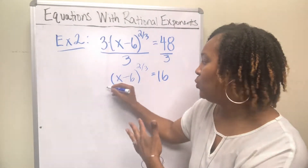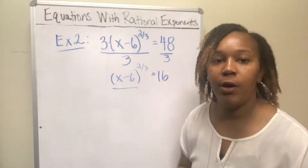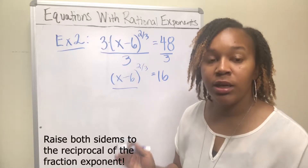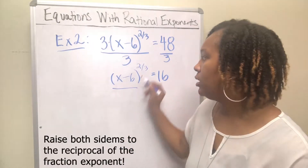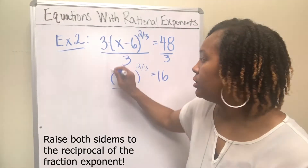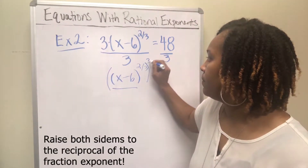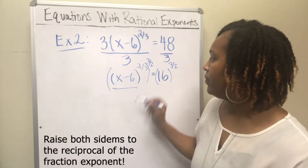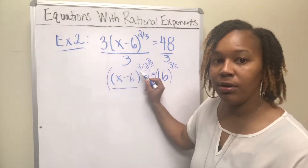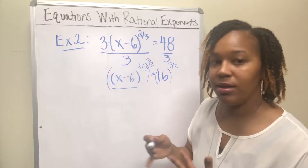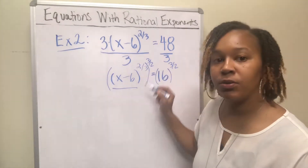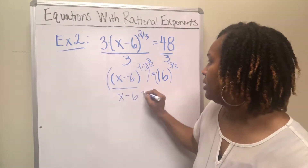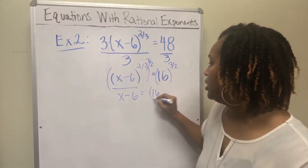Now we have this one expression raised to a fractional power. To get rid of it, we want to raise both sides to the reciprocal of that fraction. The reciprocal of 2/3rds is 3/2. So raise both sides to the 3/2 power. You multiply the exponents: 2/3rds times 3/2 becomes 1, so this side is just (x minus 6), and the other side is 16 to the 3/2.